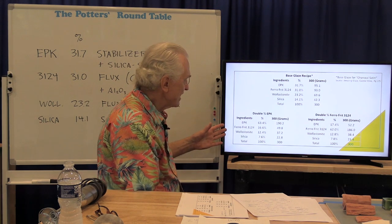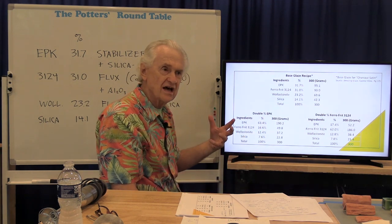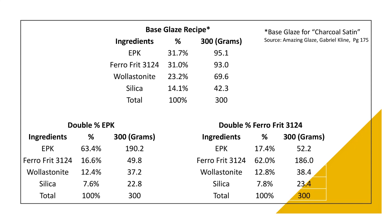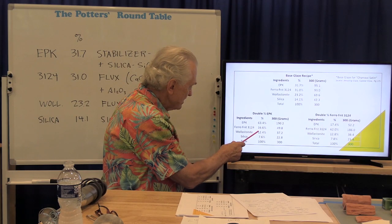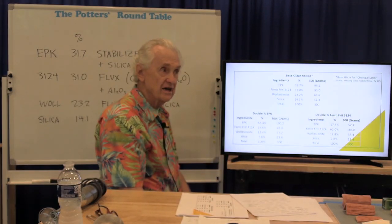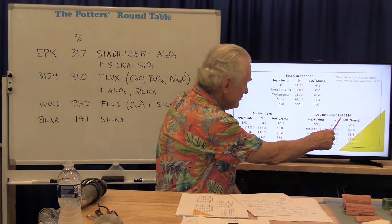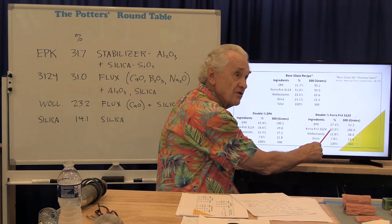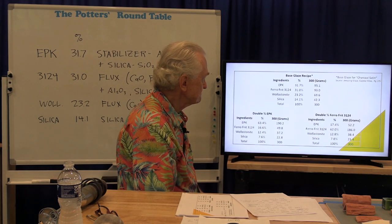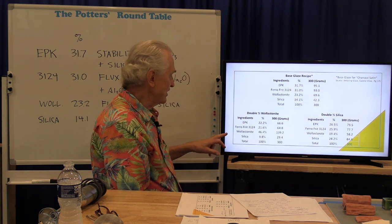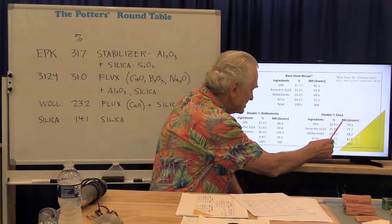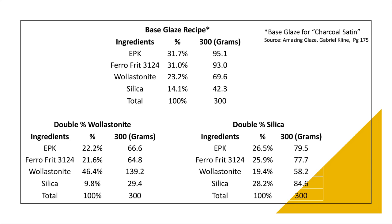Here are the recipes where I've doubled each ingredient one at a time. For double EPK: instead of 31.7%, we use 63.4%, with the other three ingredients kept in the same proportions among themselves. For double Frit 3124: instead of 31%, we use 62%, with the others adjusted proportionally. For double Wollastonite: instead of 23.2%, we use 46.4%. And finally, double Silica: instead of 14.1%, we use 28.2%. So we have five total batches — the original and these four modified versions.